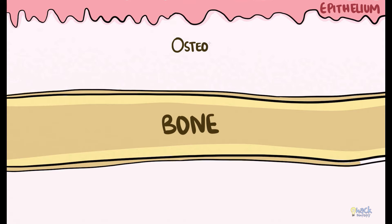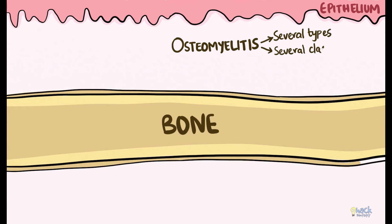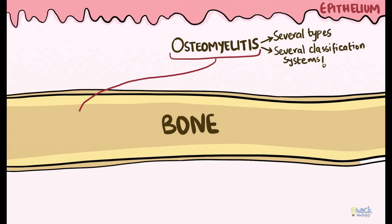There are many different types of osteomyelitis. In fact, several classification systems have been proposed to group these conditions, which have unfortunately resulted in a lot of confusion. Broadly, there are osteomyelitis lesions causing suppuration and those not causing suppuration.